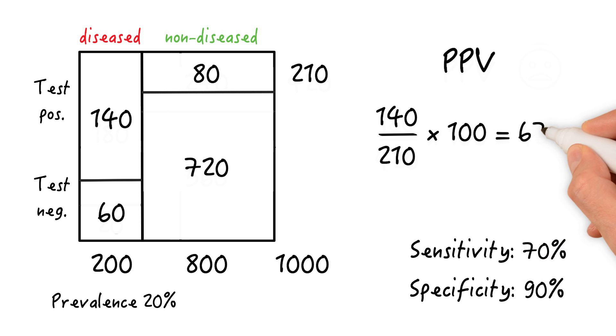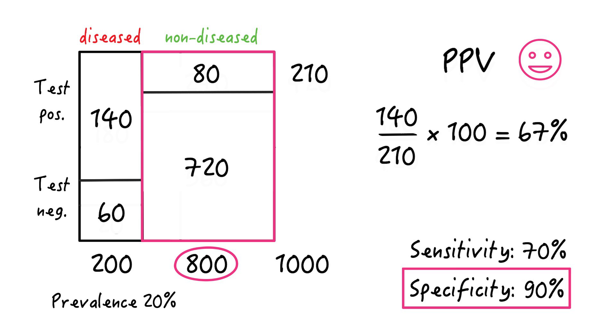And why does specificity have so much more influence on the positive predictive value than sensitivity? Well, because there are many more people in the non-diseased group. Therefore, a 1% change on the right side of the vertical line, or the specificity, has a much bigger impact than a 1% change on the left side, or the sensitivity.